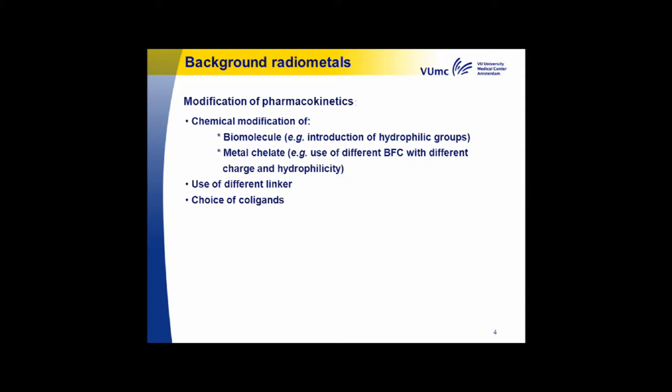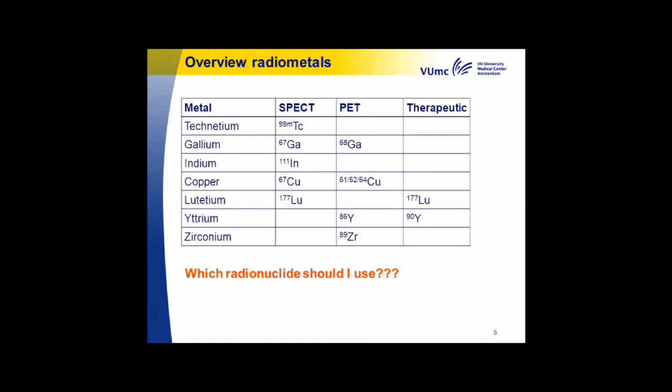Here's an overview of the different radiometals I would like to discuss. I will start with technetium, then go to gallium and indium — they have comparable chemistry so I will discuss them together. Then the copper isotopes, then lutetium and yttrium which are also comparable, and finally zirconium, which I am mostly involved with in daily practice. But if you see all these radionuclides, what should you use?